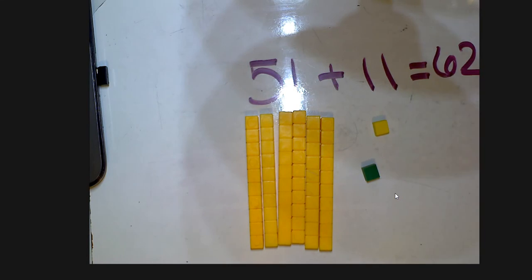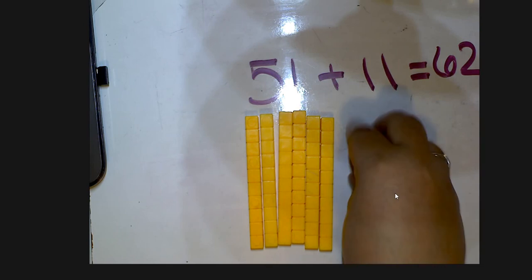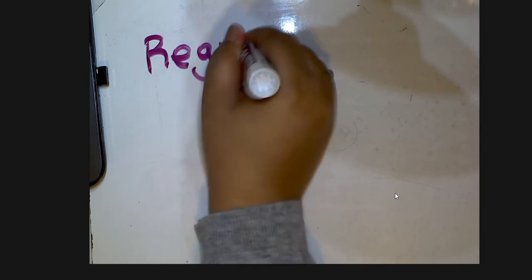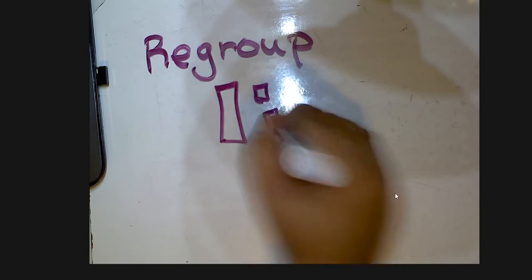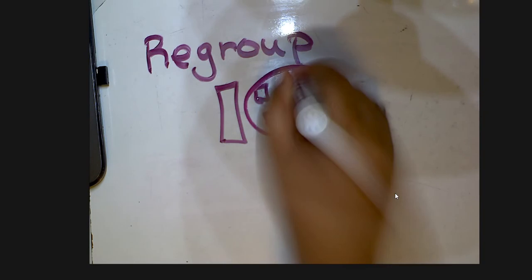Okay, we're gonna step it up a notch and make it a little bit more difficult by doing something called regrouping. Now if you remember when we were doing smaller numbers, regrouping is where you just have some ones and you group them together to make a new ten. That might not make sense to you right now, but that's okay — just watch and it'll come to you.